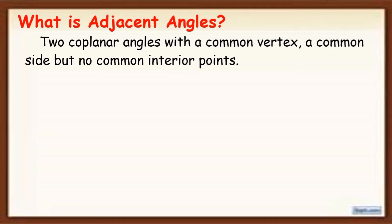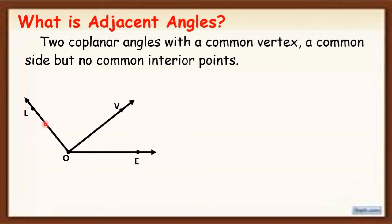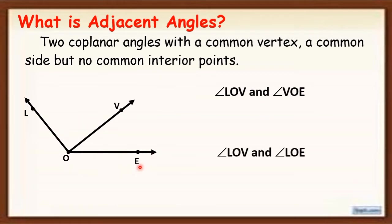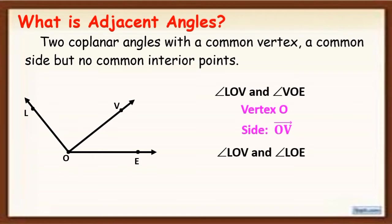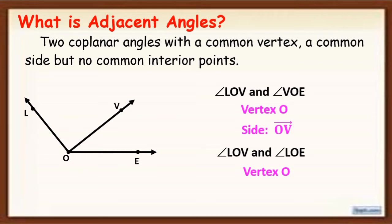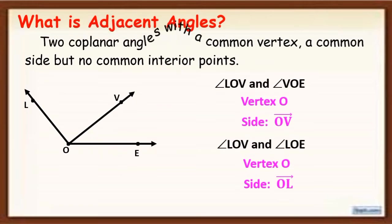So for example, we have this figure. What can you say about angle LOV and angle VOE, and angle LOV and angle LOE? As you can see, angle LOV and angle VOE share vertex O, and their common side is ray OV. While angle LOV and angle LOE, their vertex is also O and their common side is ray OL.